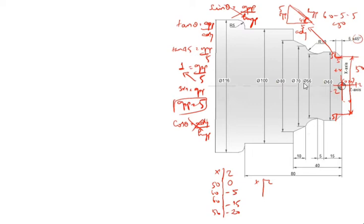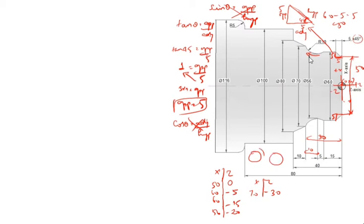After that, there is a radius — R is 10. This goes clockwise. Clockwise is G02. Anti-clockwise is G03. So this is G02, R10 — up to here finished. After that, you go this side: X is 80, Z value is 40, so minus 40. This is 80, Z minus 40. After that, you go this side — this one is 100, but this distance is 40, minus 40 only. So X is 100, Z is minus 40. Up to here finished.